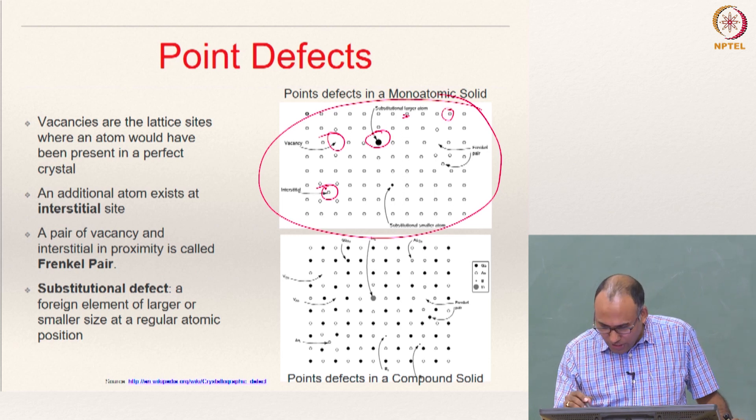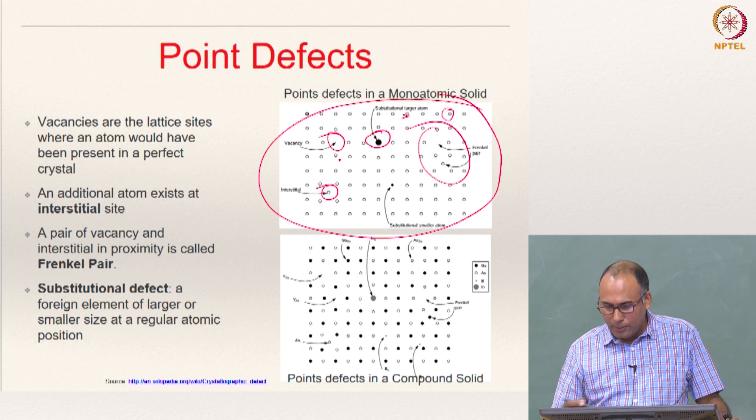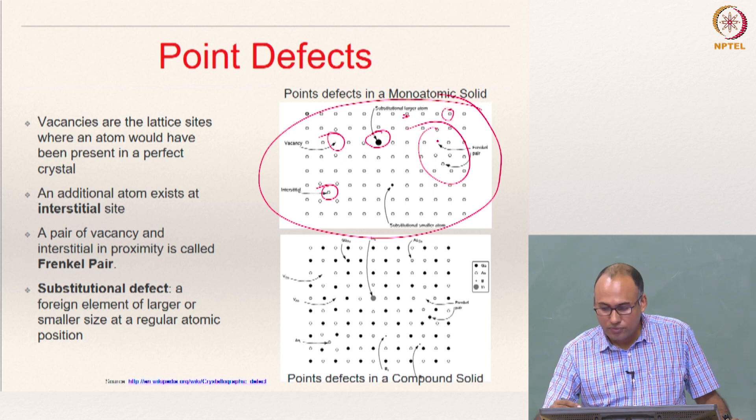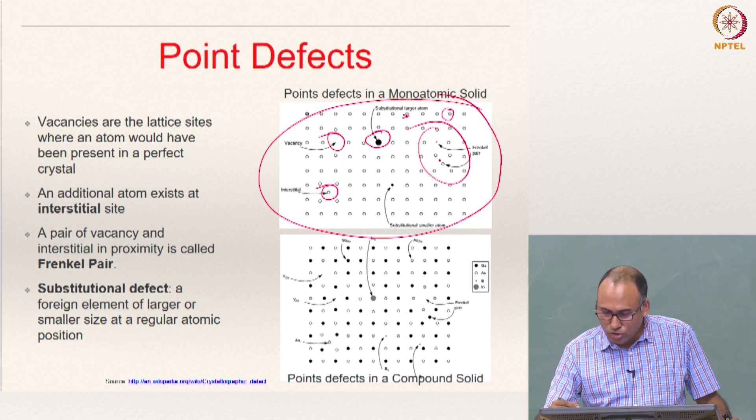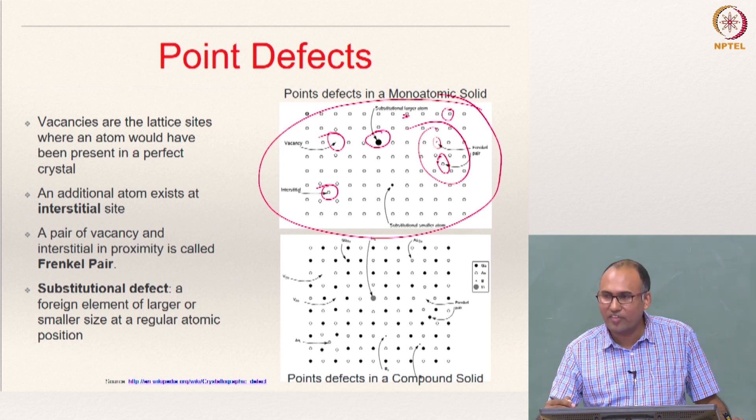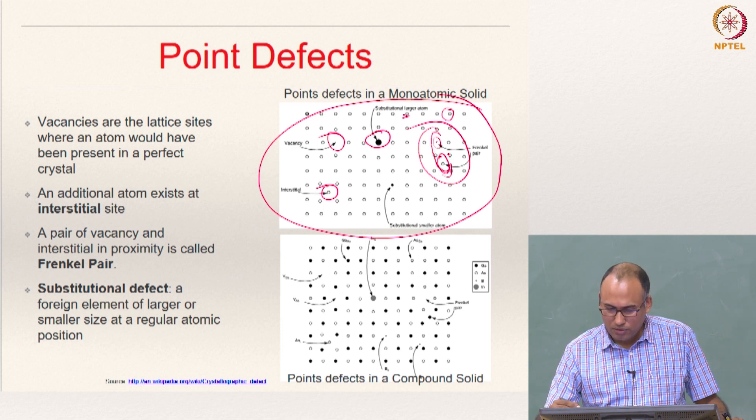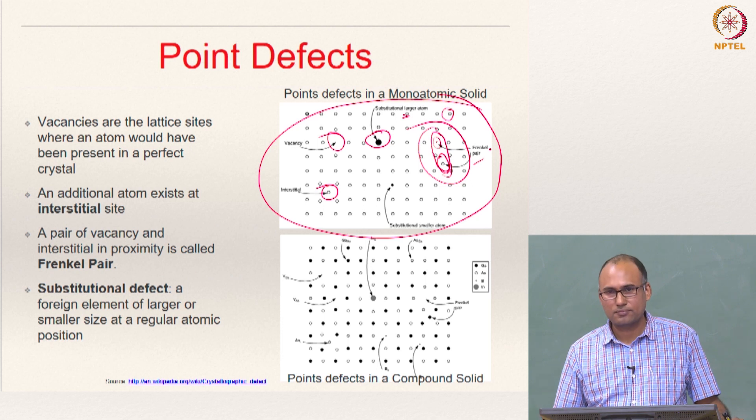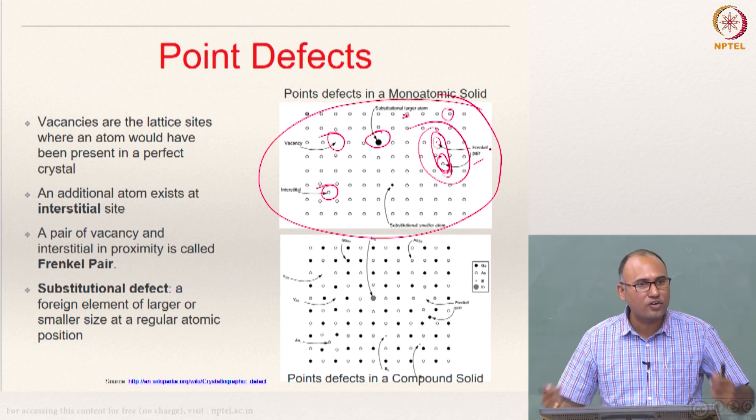And now if you carefully look at it, look here, you have a vacancy and very close to that vacancy you have an interstitial. You have vacancy here and very close to the vacancy you have an interstitial. And such a pair is called Frenkel pair.